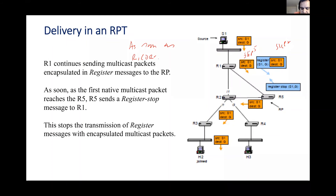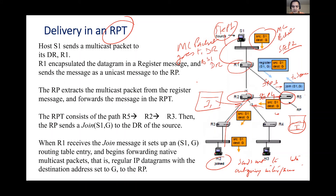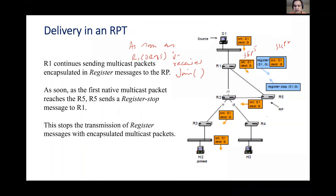Step five: R1, which is the Designated Router of the source, received the Join message from the RP in step three. As a result, it is now sending two packets: the multicast packet still wrapped in a Register, plus a duplicate native multicast — the yellow packet only — as step five.